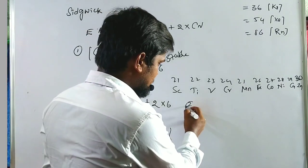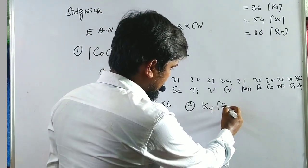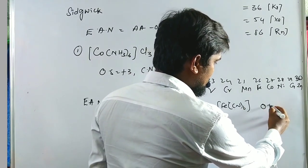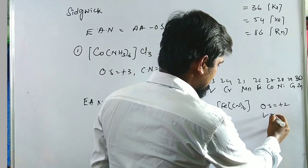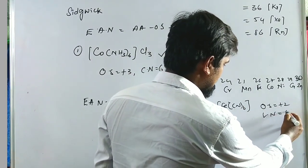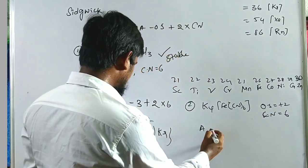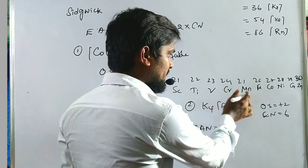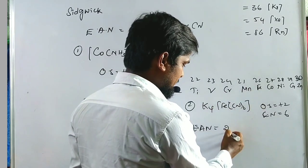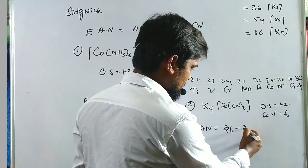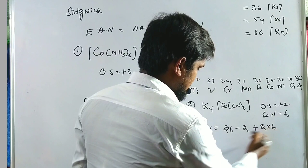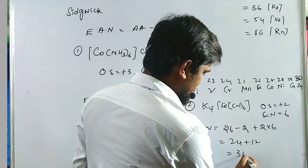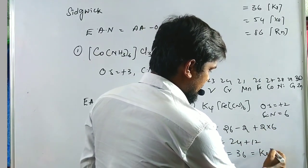The second example is K4[Fe(CN)6]. Here, the oxidation state of iron is +2 and the coordination number is 6. EAN = 26 − 2 + (2 × 6) = 24 + 12 = 36, which equals krypton. This complex is also stable.